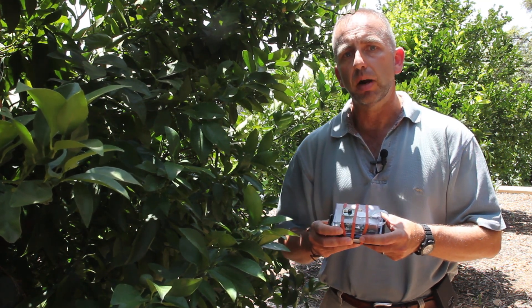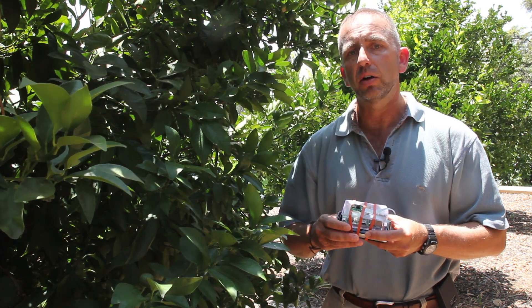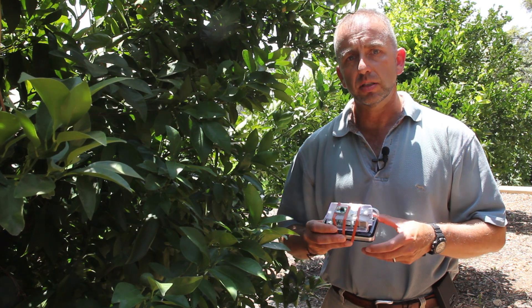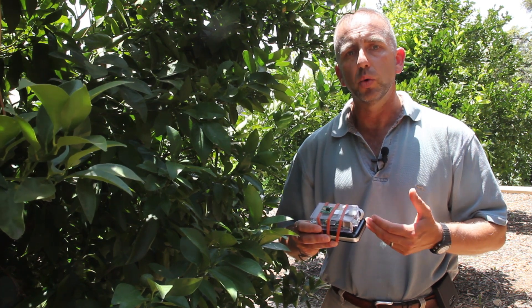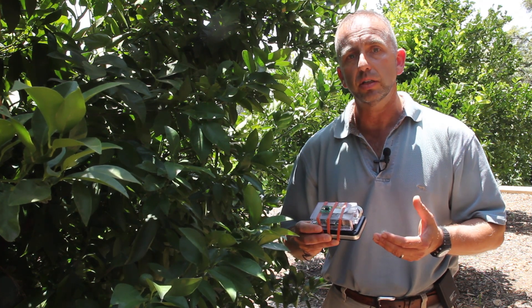Ants are particularly disruptive to the biological control of Asian citrus psyllid, an invasive pest that feeds on citrus. Asian citrus psyllid spreads a bacterium that causes a disease called Huanglongbing, or citrus greening, and this disease is lethal to citrus.